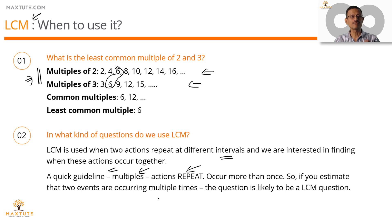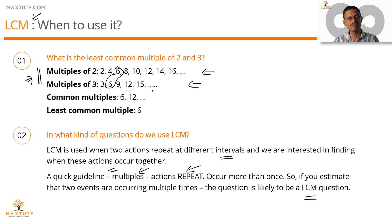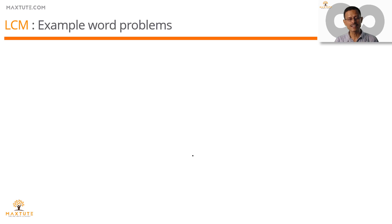If two things are happening more than once and you want to find out the meeting point when the two things repeating at different intervals will happen together, then we'll be using LCM. The question is likely an LCM question. So A repeats in intervals of 2, B repeats in intervals of 3 — we want to find out when both will occur together. Let's look at a couple of examples.